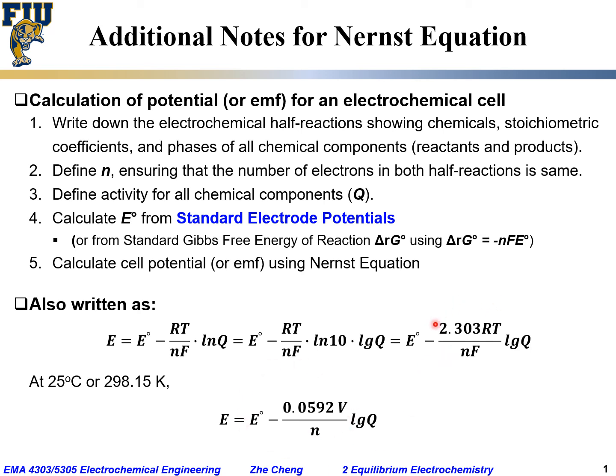Then you can simplify the coefficient to get E° minus 0.0592 volts divided by n, the number of electrons transferred in the reaction, times the log Q, log of reaction quotient. These are just some additional ways to write or you will come across for Nernst equation and pay attention to them.